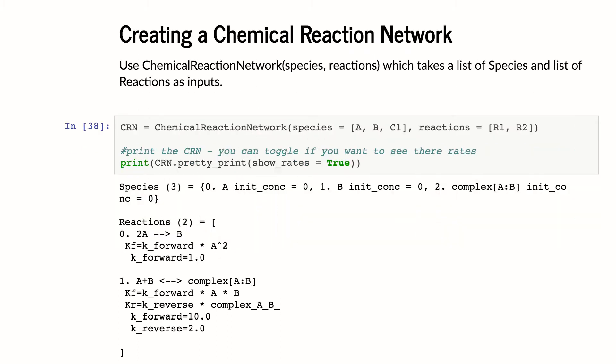Putting this all together to make a chemical reaction network is easy. I just type chemical reaction network and define it to a variable CRN. You can call it something else if you want. And I give it a list of species A, B, and C1, and my reactions R1 and R2. And then I can print it.